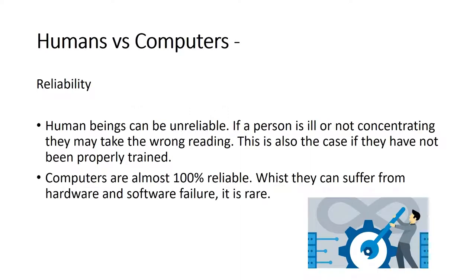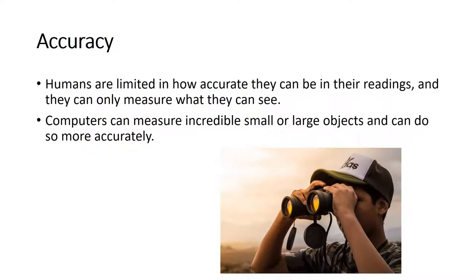Reliability. Human beings can be unreliable. If a person is ill or not concentrating, they may take the wrong reading. This is also the case if they have not been properly trained. Computers are almost 100% reliable. While they can suffer from hardware and software failure, it is rare.